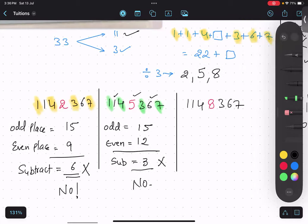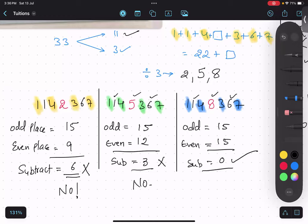The last number, definitely it is going to be the answer, but let us check. Odd places 15, even places 15. Very good, subtraction is 0. So it is divisible. It should be 0 or in the multiple of 11, so my answer is correct.